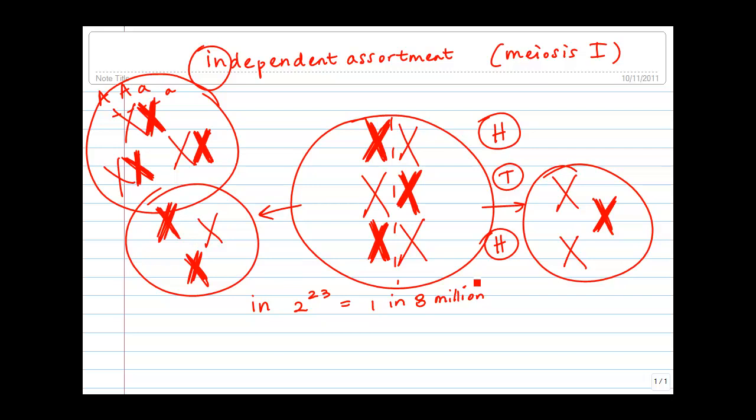So if you put all of my egg cells in a bag and pull out one, set it aside, pull out the next one, you have a 1 in 8 million chance of pulling out the same egg cell twice. The same, of course, goes for sperm cells.